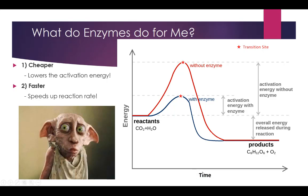It also shows the time — how long it takes to get to the product state is a lot faster with an enzyme than without. On your exam, one of the things I'll give you is this picture with the words deleted and just letters, and I'll ask: which one represents the reaction with an enzyme, which one without? What represents the activation energy without an enzyme? How about with an enzyme? So be familiar with this chart — it's a pretty good one.